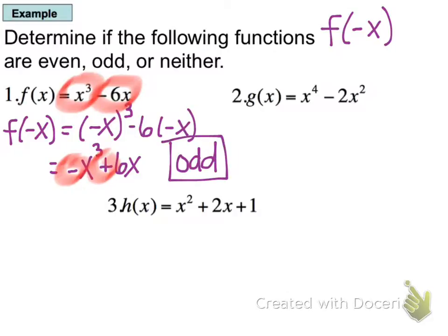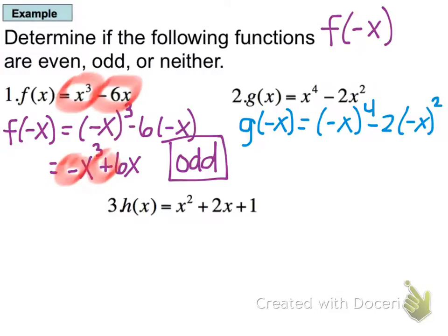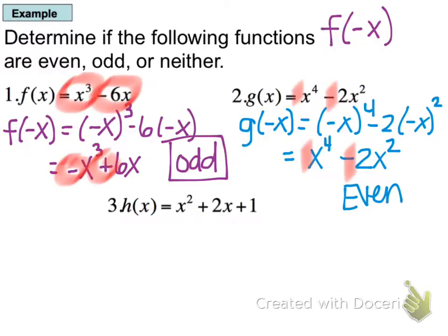For the next function, we plug in negative x and get negative x to the fourth minus 2 times negative x squared. Simplifying: negative x to the fourth is actually positive x to the fourth because of four negative factors multiplying, giving x to the fourth minus 2x squared. The signs stayed exactly the same, so this is an even function — plugging in negative x gives back the same result as positive x, which produces y-axis symmetry.